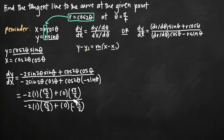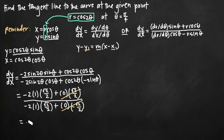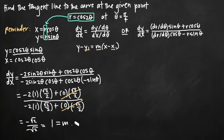The terms multiplied by 0 cancel, and we're left with exactly the same expression in the numerator and denominator. Simplifying gives us negative root 2 over negative root 2, which equals 1. So our slope m equals 1.